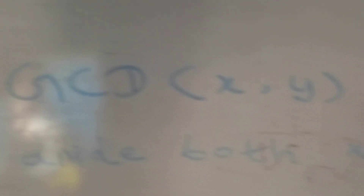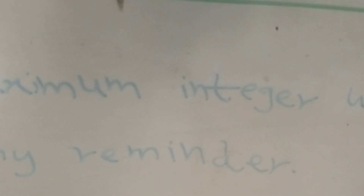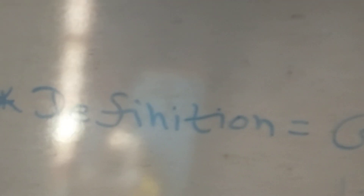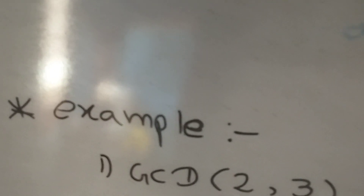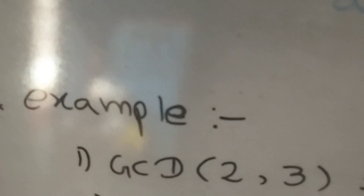GCD of x comma y represents the maximum integer which can divide both x and y without any remainder — that means the remainder of x divided by y needs to be zero. We might not fully understand this through the definition alone, so let's look at some examples.